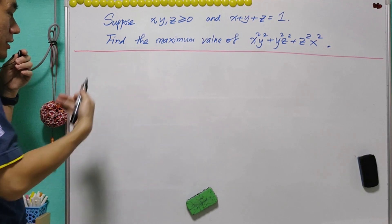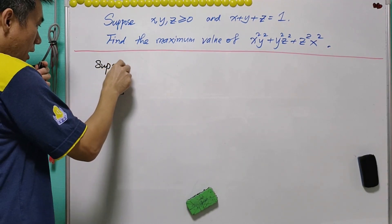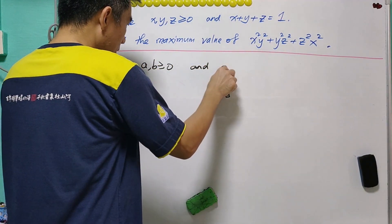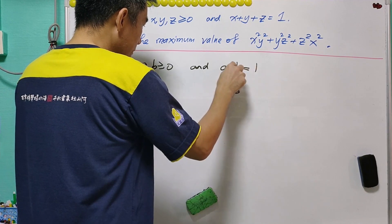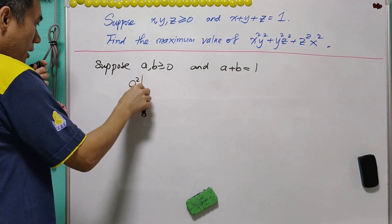First of all, we consider a simple case. Suppose a and b are non-negative such that the sum is equal to 1. Then, what will happen to a squared b squared?